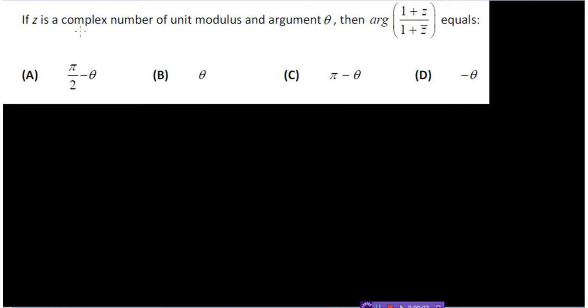We are given that there is a complex number of unit modulus and argument theta, and we need to calculate the value of argument of 1 plus z upon 1 plus conjugate z.